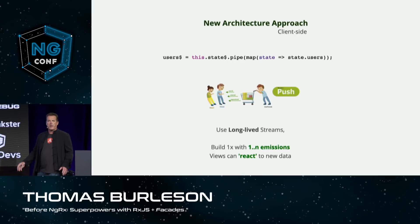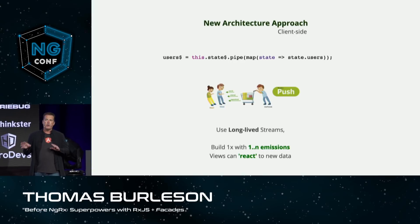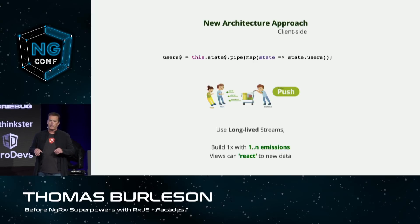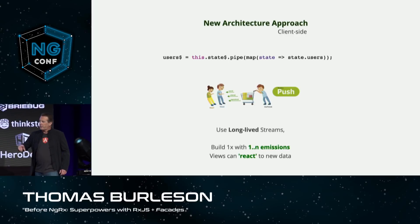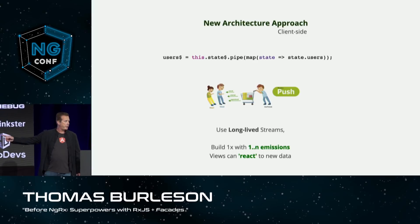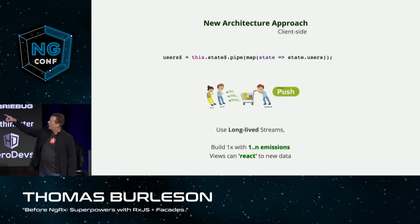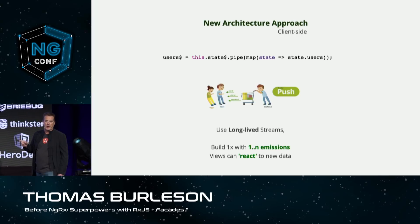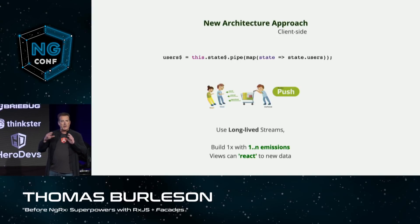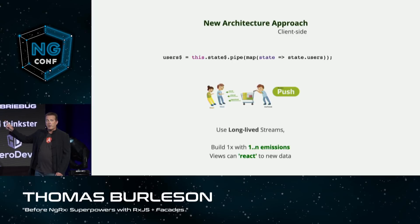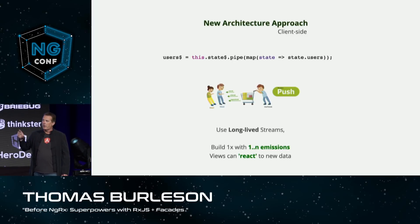What about a new approach? What if we could change our thinking to use what I call push-based services? We construct a user stream using another stream that will extract our users out whenever the state changes. This stream is now a long-lived stream — it's going to be around for as long as we want. We build it once, and we can get one to any number of emissions or events that come out.